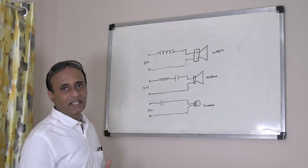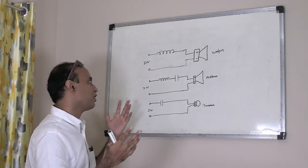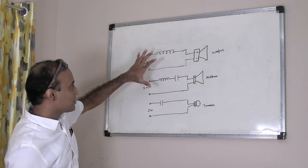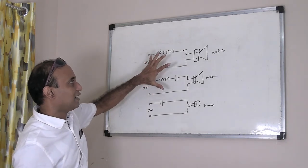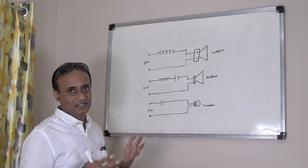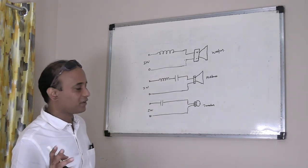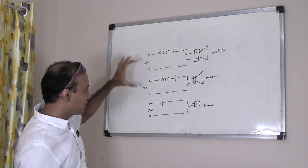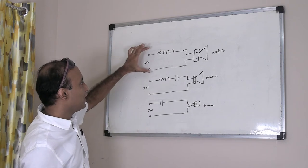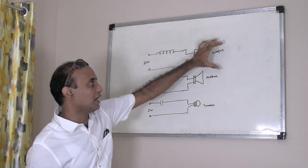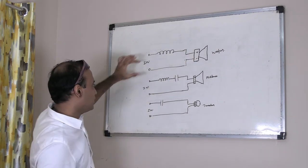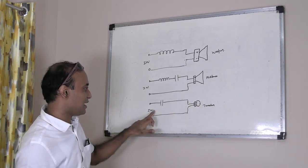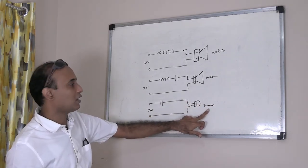Let us start with an actual crossover network consisting of inductors and capacitors. Any crossover network is made up of filter circuits that can filter out different bands of frequencies. When we have a three-way crossover network, we need to send low frequencies to a woofer, mid-band frequencies to a mid-bass unit, and higher frequencies to a tweeter.